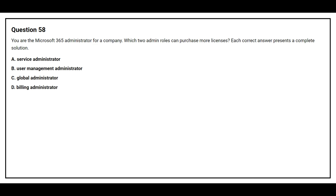Question number 58. You are the Microsoft 365 administrator for a company. Which two admin roles can purchase more licenses? Option A: Service administrator. Option B: User management administrator. Option C: Global administrator. Option D: Billing administrator. The correct answers are Option C, global administrator, and Option D, billing administrator.